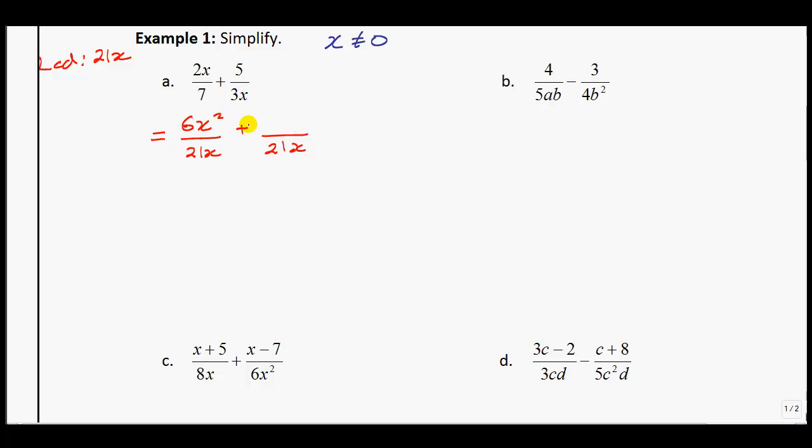I multiply the 7 by 3x, so you have to multiply the numerator by 3x, giving you 6x squared. The 3x, you have to multiply it by 7, so the numerator is multiplied by 7, giving you 35. From here, I will join the denominators together since they are the same, and that is my solution. Very straightforward. You are going to have questions that are that easy.